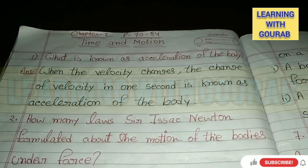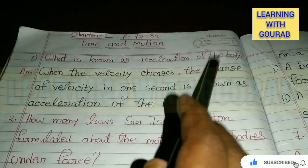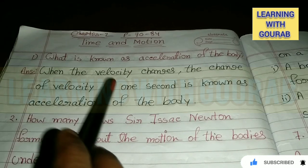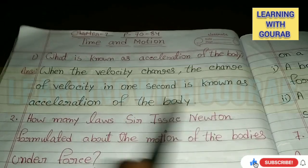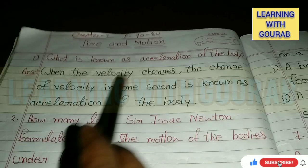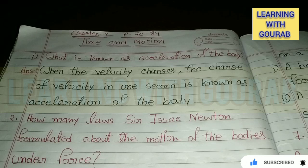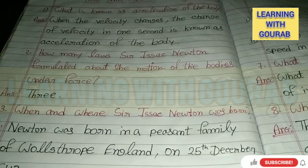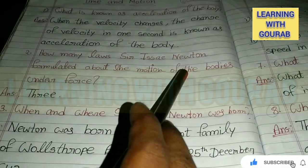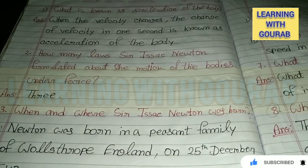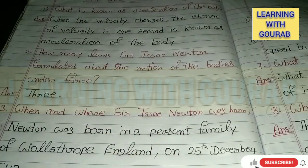Chapter Time and Motion — first question: What is known as acceleration of the body? Answer: When the velocity changes, the change of velocity in one second is known as acceleration of the body. Next question: How many laws did Sir Isaac Newton formulate about the motion of bodies under force? Answer: 3.